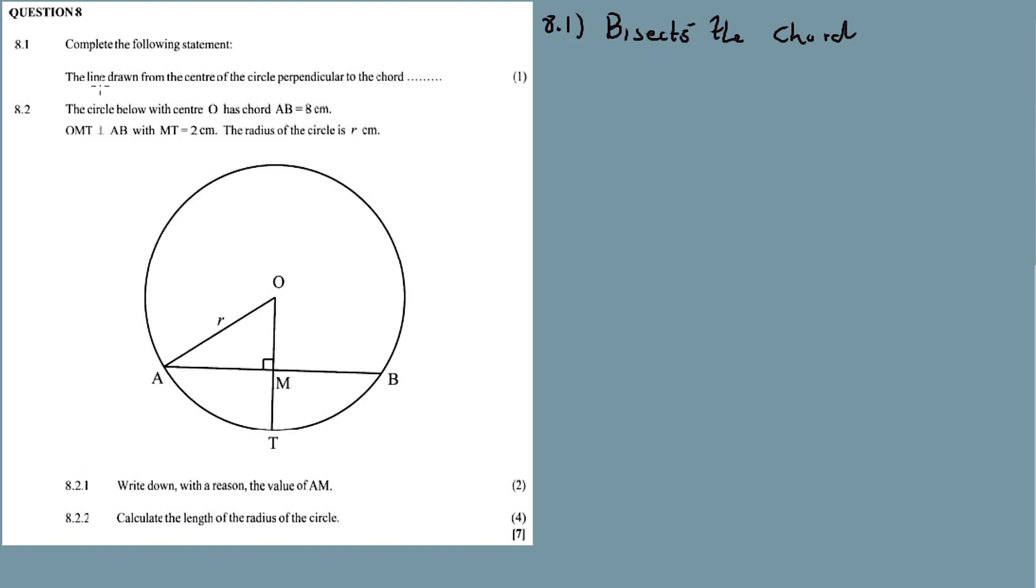The line drawn from the center of the circle perpendicular to the chord bisects the chord. Something like this. But I have a strange question. This is our answer for 8.1.